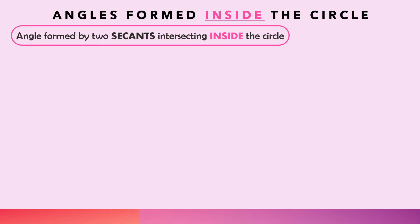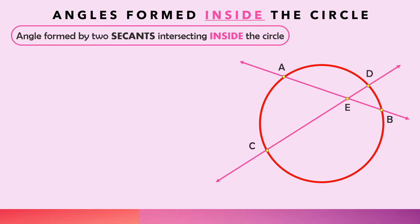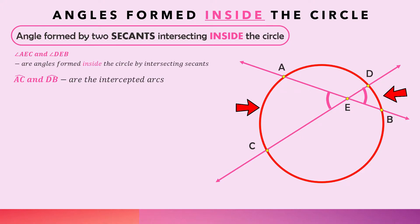Let's start with the angles formed inside the circle. If we have circle with secant AB and secant CD intersecting inside the circle at point E, then angles AEC and DEB are the angles formed by two secants intersecting inside the circle. The intercepted arcs for these angles are arc AC and arc DB.